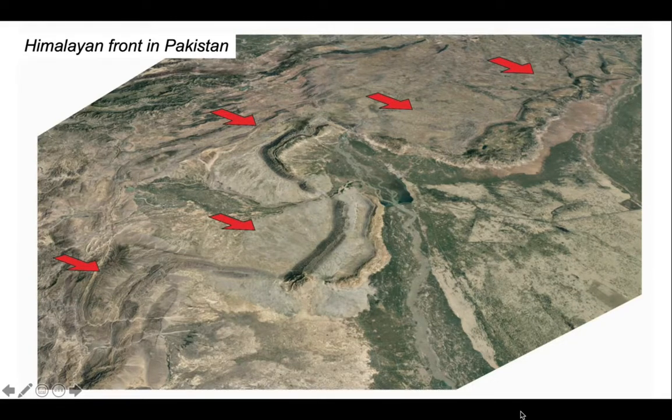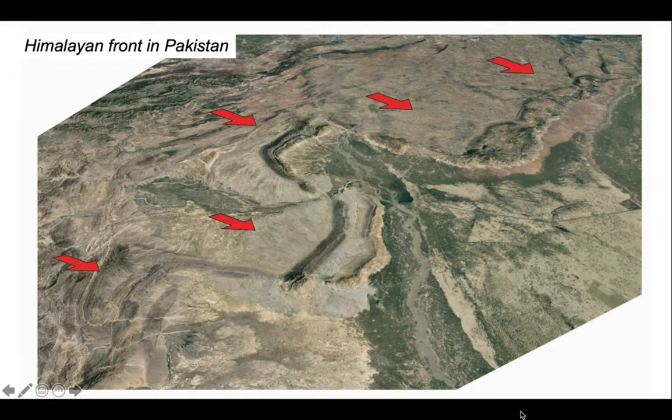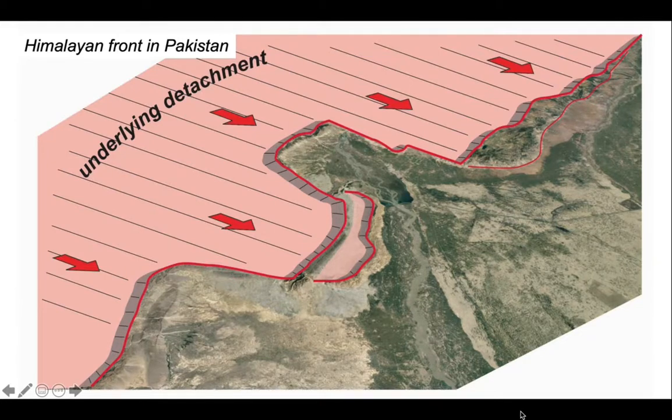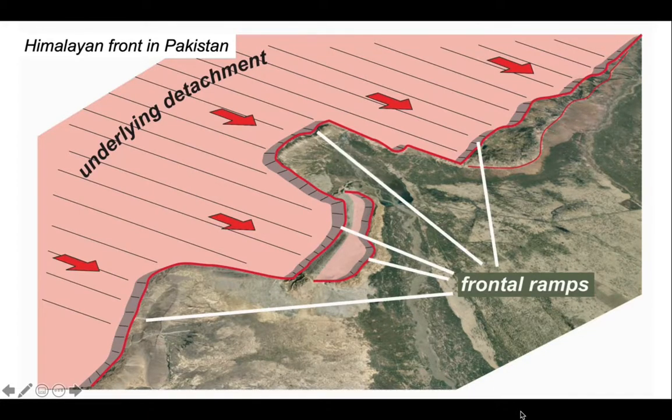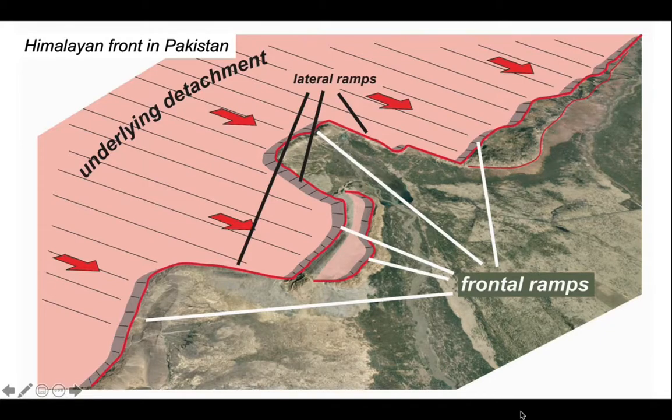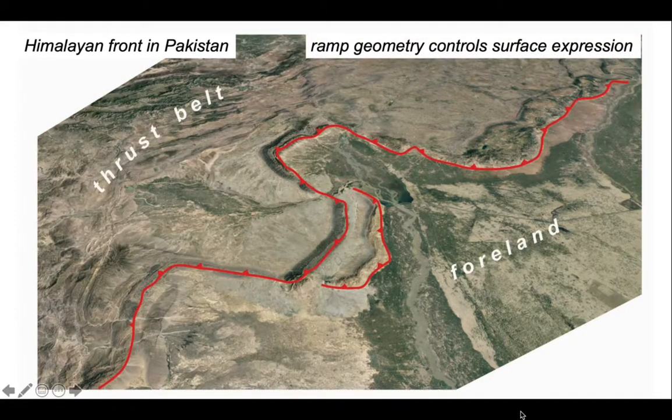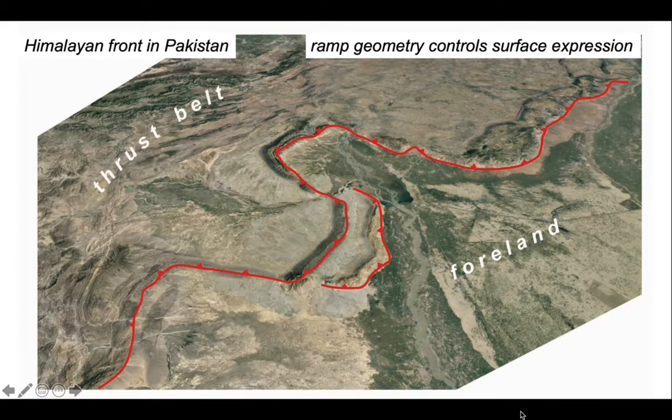The thrusting direction is shown by these arrows carrying the main Himalayan chain out into the foreland. Let's strip away the thrust sheet and think about the shape of the detachment and the associated ramp which localizes the thrust front. There's a big flat by which the thrust belt is detached, and the mountain front is controlled by the ramp geometry which is highly irregular. We can recognize frontal ramps where the angle between the ramp trend and thrusting direction is orthogonal, and lateral ramps where the thrust direction is parallel to the ramp trend. Mixing back on the thrust sheet, we can see that the trend of the ramps has controlled the line of hills which picks out the anticline formed along the mountain front.